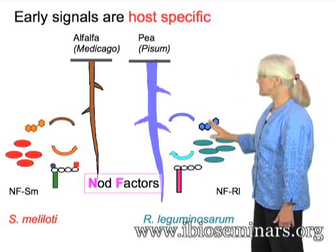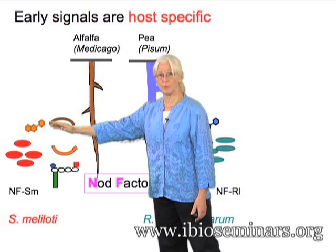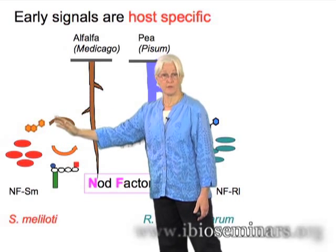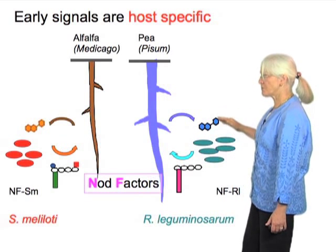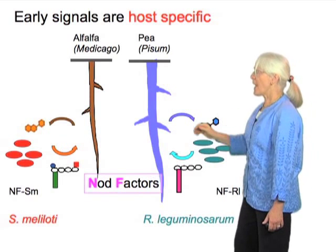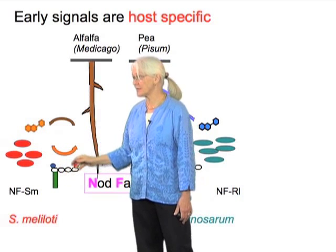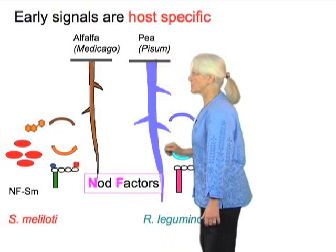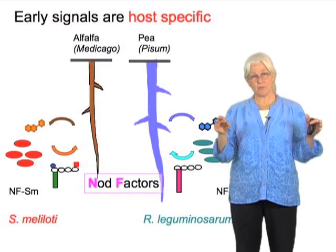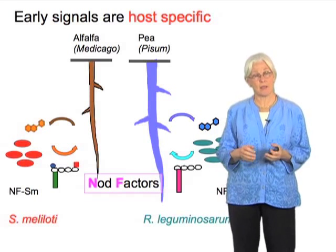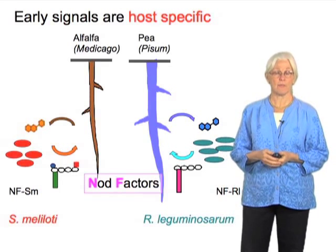What we see is some specificity. A signal goes out specifically from alfalfa, or a slightly different one from pea, and the corresponding bacteria — which respond to this signal — make a slightly different nod factor. So this conversation, plant to bacteria and back again, already has some of the hallmarks of host specificity.